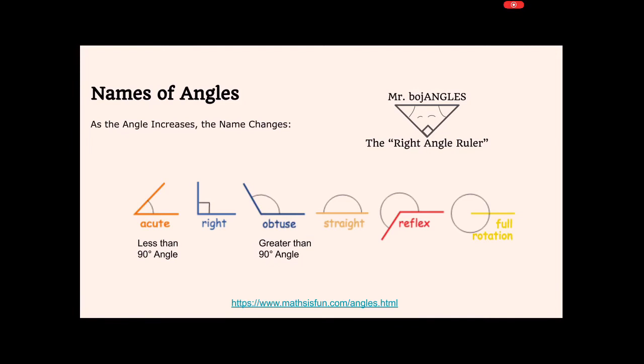Now, I have a nice little way of testing just by looking at angles whether or not they are right angles or if they're less than 90 degrees, if they're smaller than right or greater than right, greater than 90 degrees. I've got this little guy up here. You see him? His name is Mr. Bojangles.